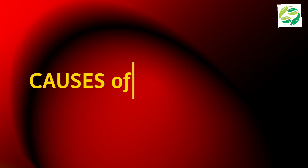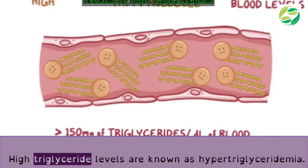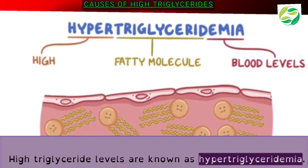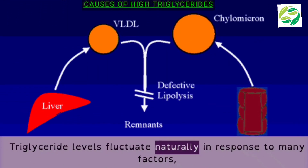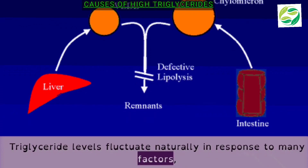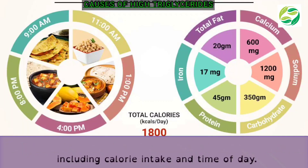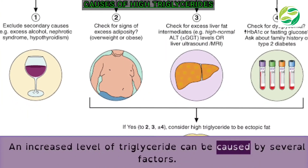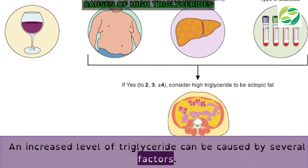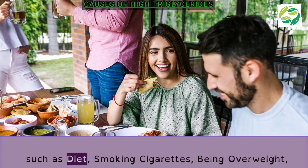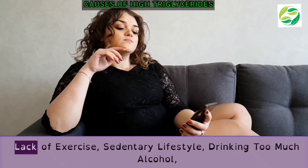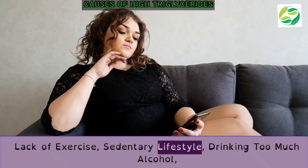Causes of high triglycerides: High triglyceride levels are known as hypertriglyceridemia. Triglyceride levels fluctuate naturally in response to many factors, including calorie intake and time of day. An increased level of triglycerides can be caused by several factors, such as diet, smoking cigarettes, being overweight, lack of exercise, and a sedentary lifestyle.